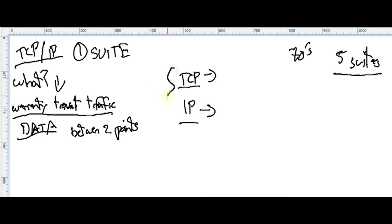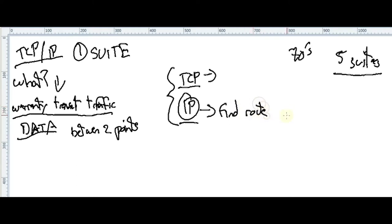TCP/IP is based on two protocols: Transmission Control Protocol and Internet Protocol. What is IP doing within this suite? IP helps us to find a way, or find the best route to the destination. Within this suite, the IP part is responsible for finding the route to the destination.